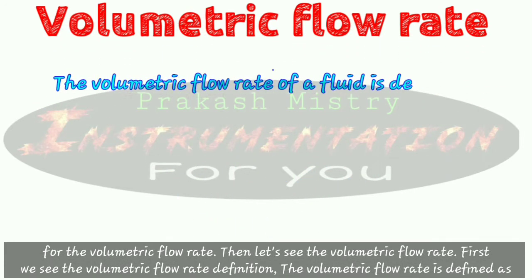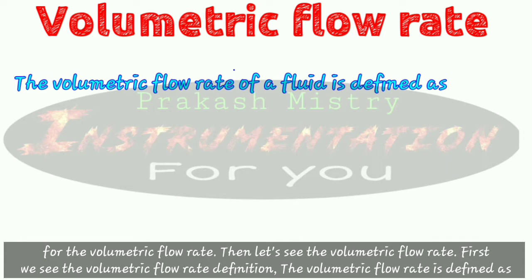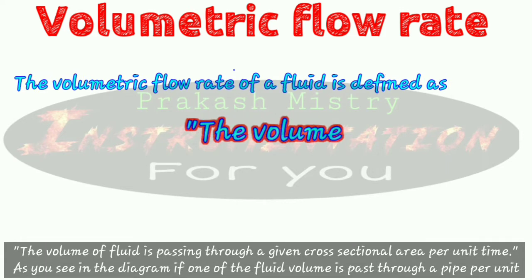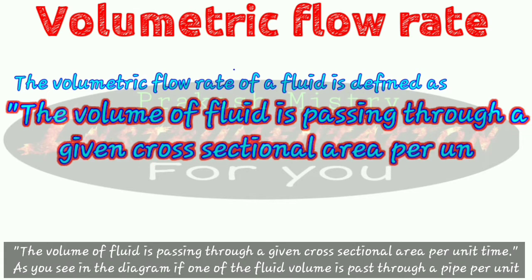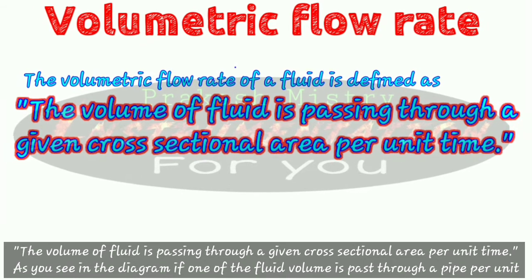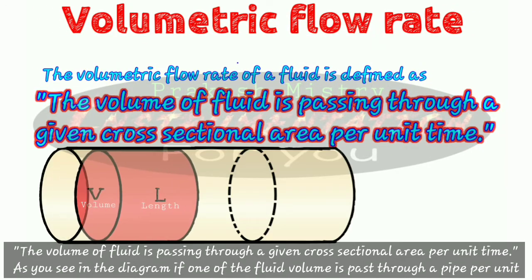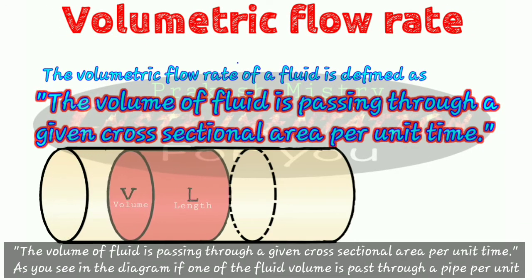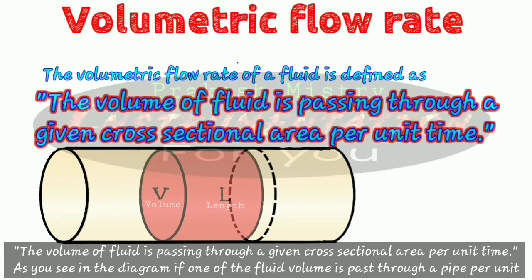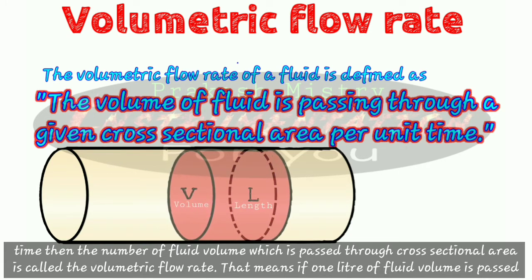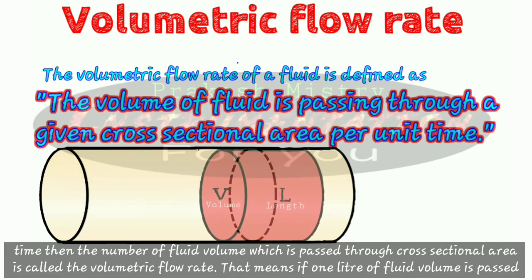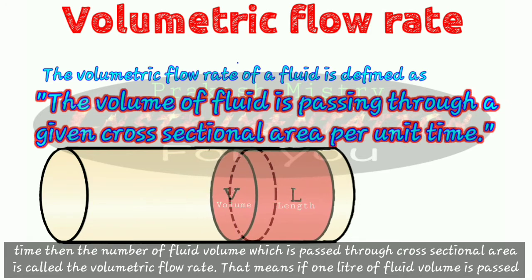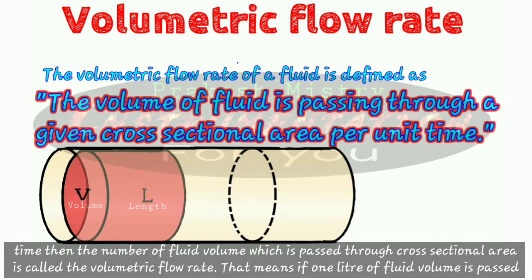First we see the volumetric flow rate definition. The volumetric flow rate is defined as the volume of fluid passing through a given cross section area per unit time. As you see in the diagram, if a fluid volume is passed through a pipe per unit time, then the number of fluid volumes passing through a cross section area is called the volumetric flow rate.